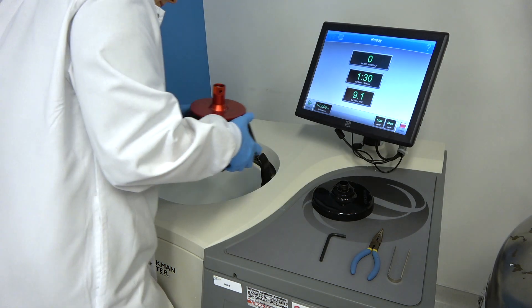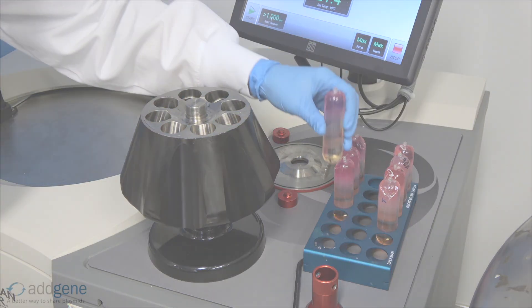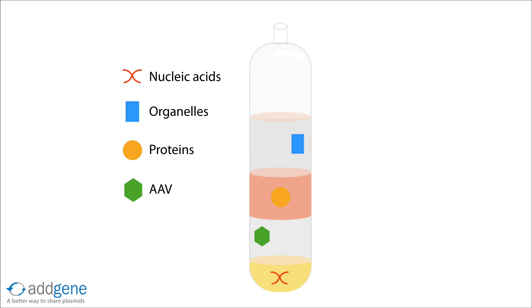After the spin is complete, gently remove your column from the ultracentrifuge, being careful not to disturb the layers. We know that during the spin, the AAV particles from the PBS layer should have migrated down to the 40% iodixanol layer, so that's where they'll be.